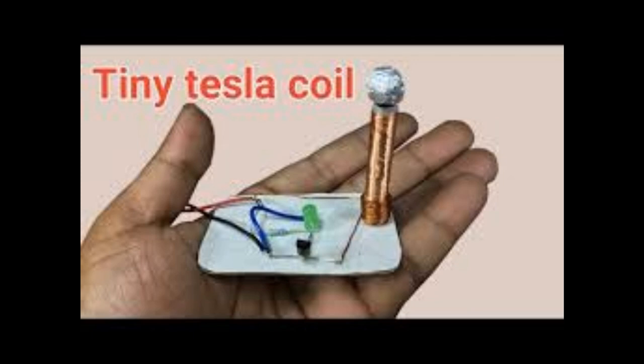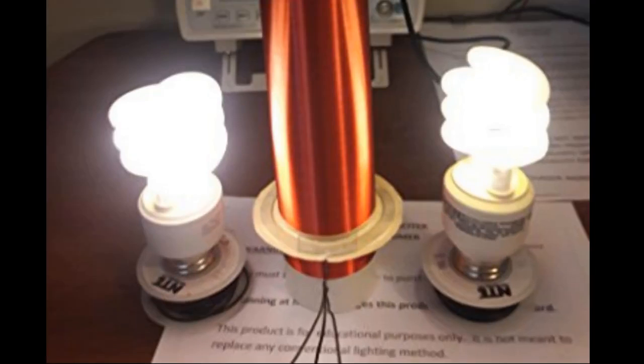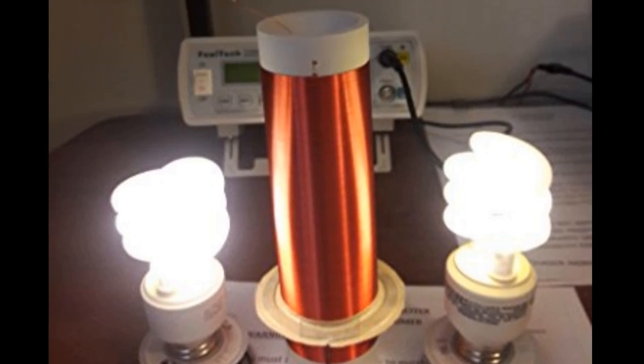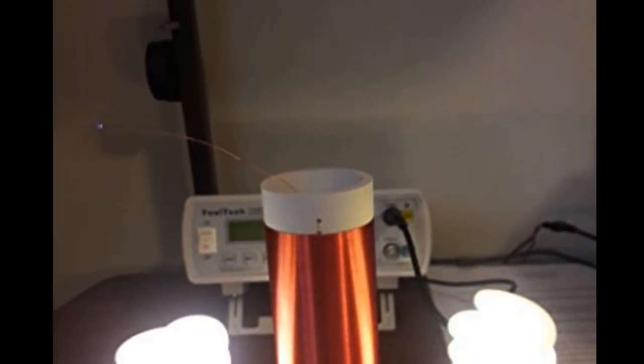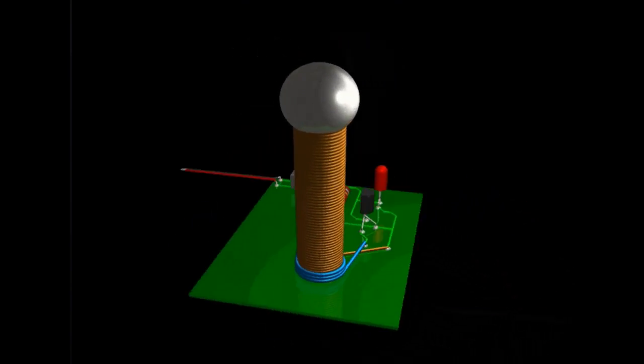Then along came the Slayer Exciter. It's actually a much simpler device, and it's named after its inventor, a user known as Slayer, on online forums. At its core, the exciter operates on principles similar to those of the Tesla coil, but it's a much simpler and more compact form of device. It typically consists of just a few basic components.